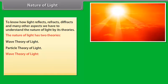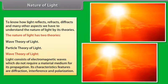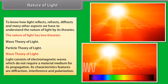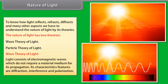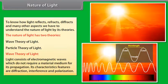Wave Theory of Light: Light consists of electromagnetic waves, which do not require a material medium for its propagation. Its characteristic features are diffraction, interference, and polarization.